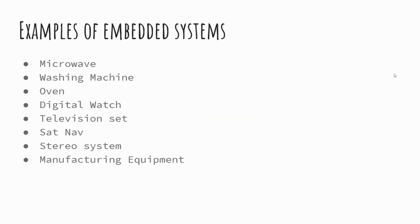There are a whole host of embedded systems — this is just an example of some. Things like microwaves, washing machines, ovens, digital watches, television sets, sat-navs, stereo systems, and manufacturing equipment such as engineering machining tools and 3D printers. If you get stuck thinking of devices, think about your house and look around the kitchen — that's a prime example and you'll probably think of a good few.